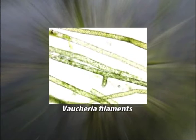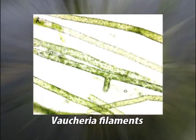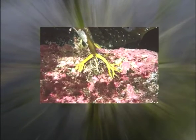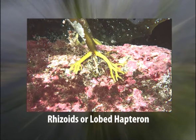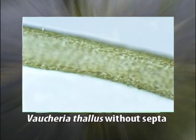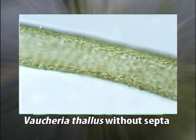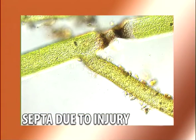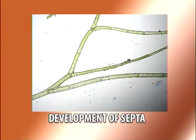The terrestrial species form extensive yellowish or deep green dense mats on wet soil and in flower pots in greenhouses, commonly known as waterfelt. The thallus is composed of yellowish-green cylindrical coarse filaments branched at irregular intervals. In terrestrial species, the thallus is attached to the substratum by small tufts of colorless rhizoids or a lobed hapteron. The aerial filaments possess monopodial branching and apical growth. As there are no septa or cross walls, the protoplasm is continuous along its entire length. Septa occur only during injury and formation of reproductive structures.